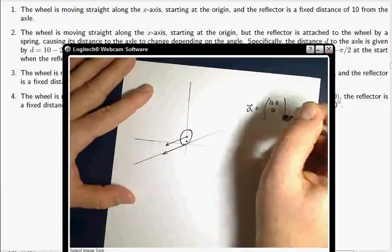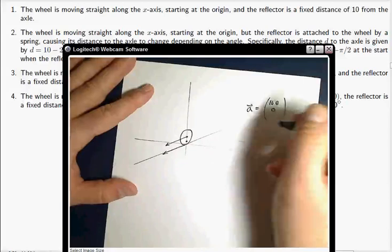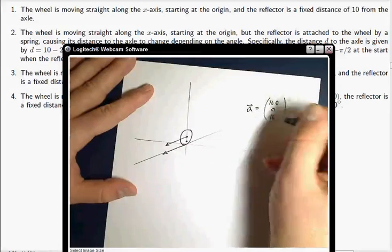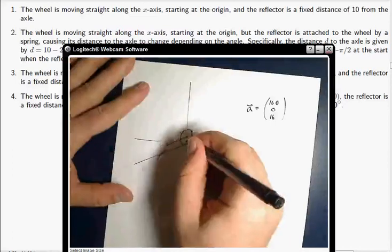So the x position is just going to be 16 theta, and then y is 0, and z is the radius, which is 16. There we go. So that's the axle.